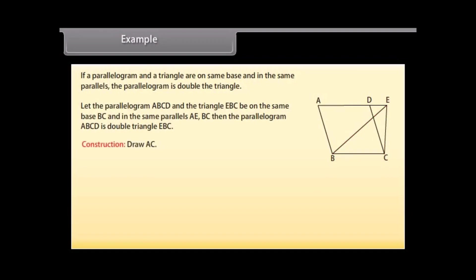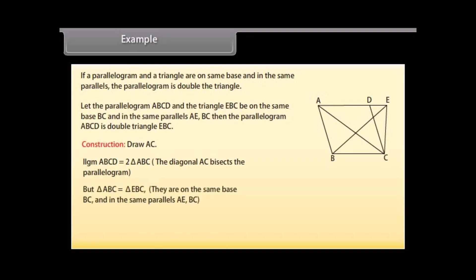Construction: Draw AC. Since AC bisects the parallelogram, the parallelogram ABCD is double triangle ABC. But triangle ABC is equal to triangle EBC because they are on the same base BC and between the same parallels AE and BC. Therefore, parallelogram ABCD is also double triangle EBC. Hence proved.